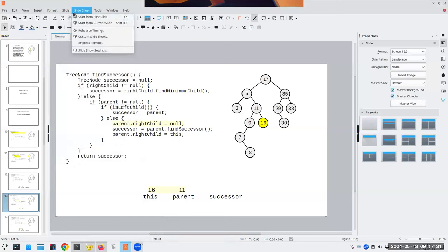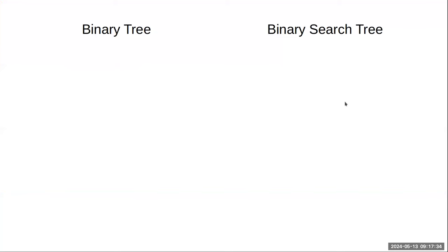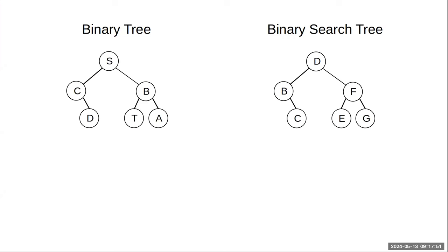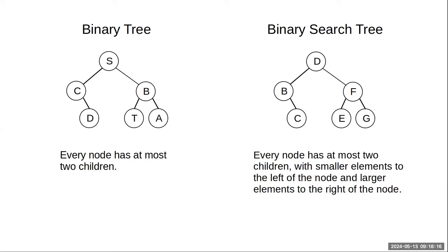Let's do a quick review. First: binary tree versus binary search tree. Does anybody remember the difference? Some people think those are two names for the same thing — they are not. In a binary search tree, the left side has everything less than the root and the right side has everything greater than the root. So all binary search trees are binary trees, but not the other way around.